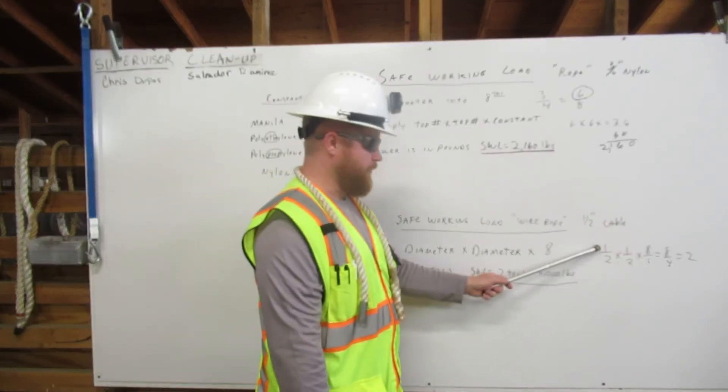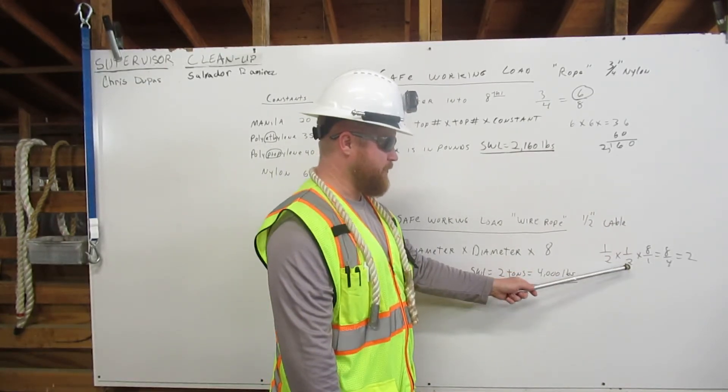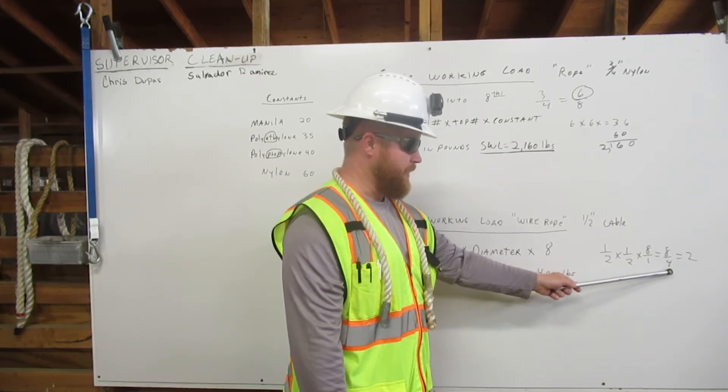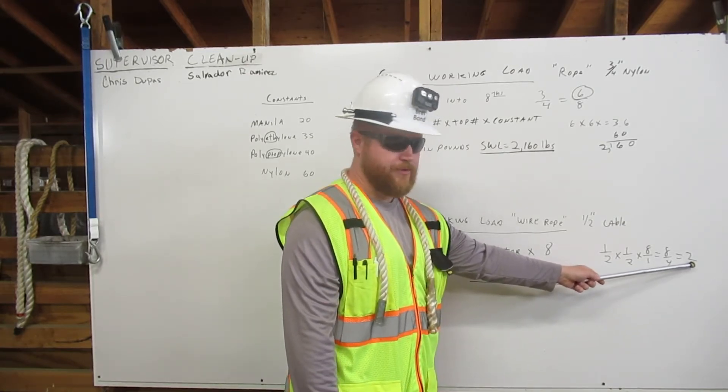So over here we have one-half times one-half times eight over one equals eight over four, which equals two.